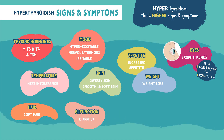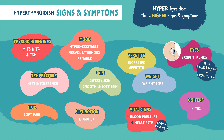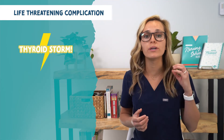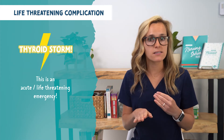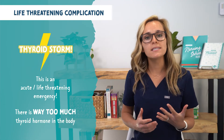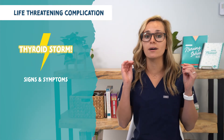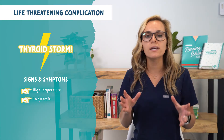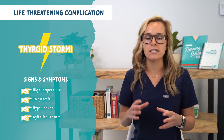For GI function, these patients have hyper GI, so you're going to see diarrhea. For vital signs, think hyper high vital signs — increased blood pressure and increased heart rate. Patients with hyperthyroidism are going to have a goiter, which is an enlarged thyroid gland. The thyroid gland is producing so much hormone and working overtime, which makes it enlarged. A life-threatening complication of hyperthyroidism is a thyroid storm — an acute, life-threatening emergency where there's way too much thyroid hormone in the body. You're going to see the same signs and symptoms but on steroids: really high temperature, really high heart rate, really high blood pressure, agitation, tremors, and delirium.